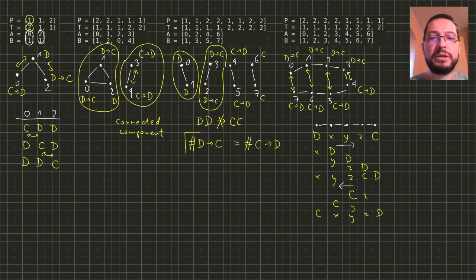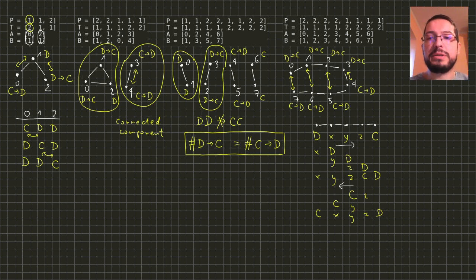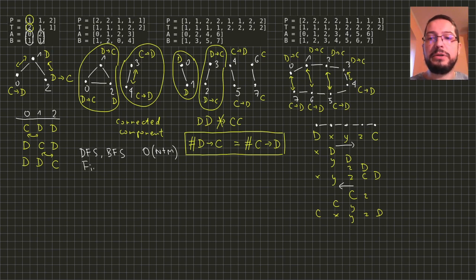That concludes the proof, and we can now present the full algorithm. First, we need to split our graph into connected components. Then for every connected component we check whether the condition is satisfied. There are many standard graph algorithms for this: we can use DFS or BFS, both running in O(n + m) time where n is the number of vertices and m is the number of edges. Alternatively, we can use a Union-Find structure, which also runs in almost linear time.